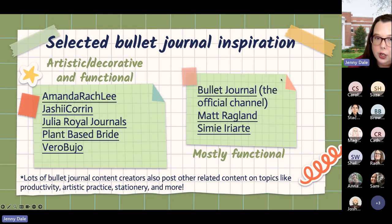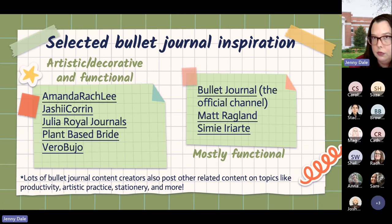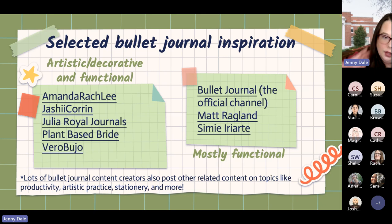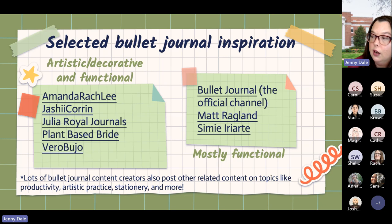Here are some of my favorite channels. If you're really into the mostly functional part, the Bullet Journal Official channel is really good. Periodically they do long live streams where Ryder Carroll shows you his migration from month to month — it's really interesting. There are also many people who do awesome artistic but still functional spreads, and many of these people also post about productivity, art, and stationery favorites. Archer and Olive is having a good sale right now.